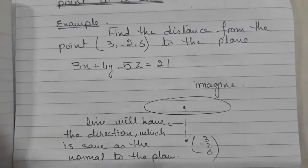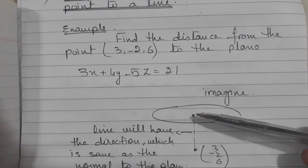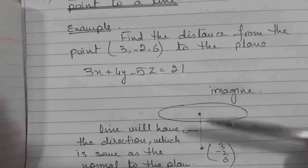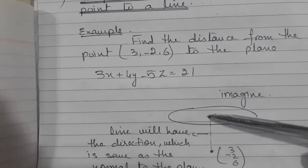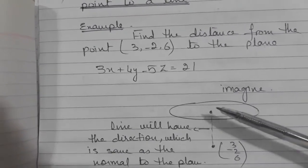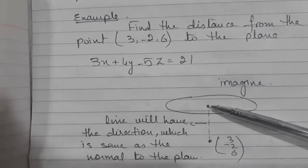If I have to find out this distance, I need to know this point. If I know this point, I can apply magnitude on these two - suppose this is A and this is B - I can apply magnitude on vector AB. So my approach will be to find out this point.